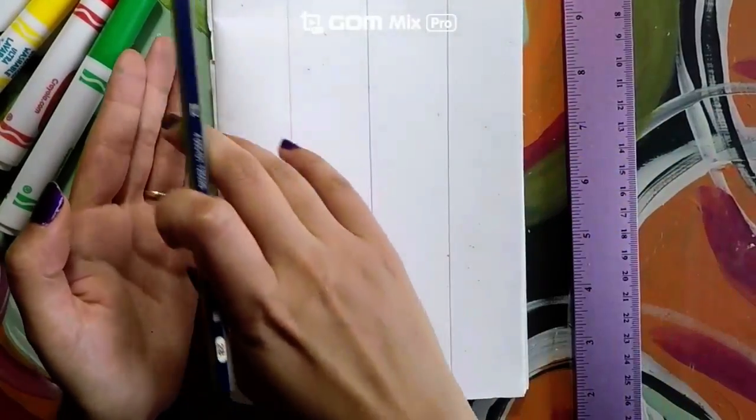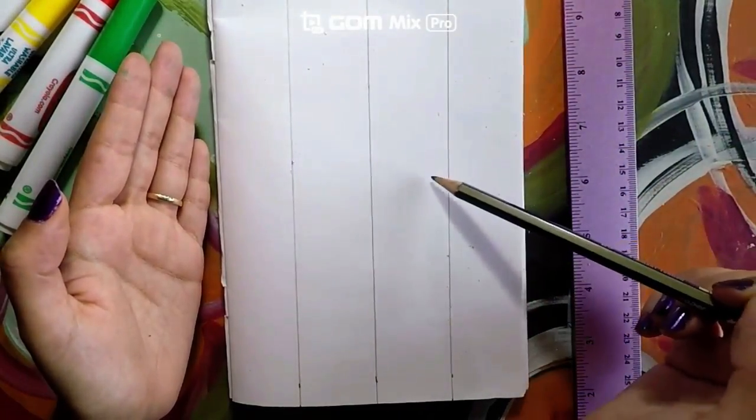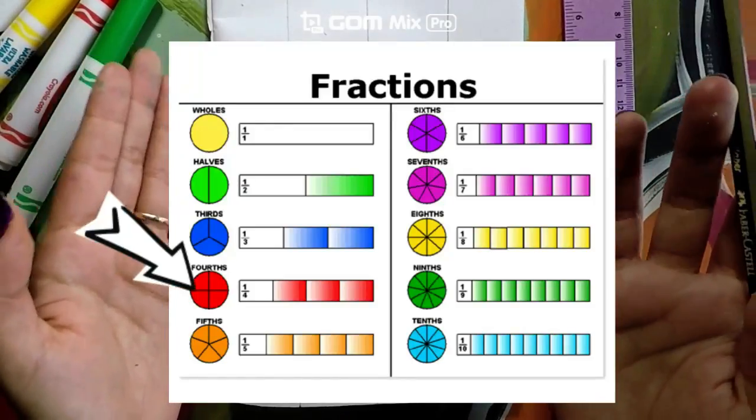And now I have partitioned my whole into one, two, three, four. Fourths. Now I have fourths.